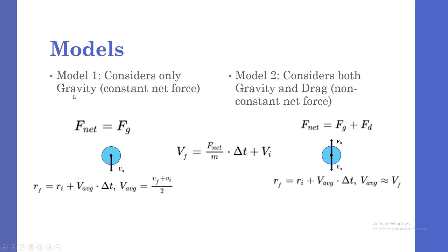For model one, we have gravity being the only force acting on it, and being a constant force. This means that I will calculate the average velocity as the final velocity plus the initial all over two.